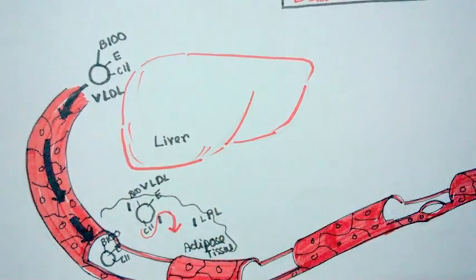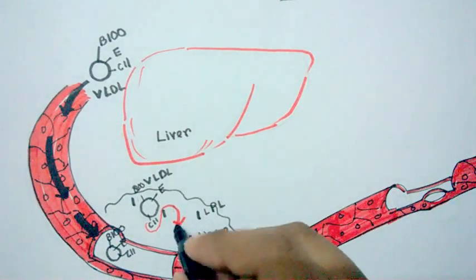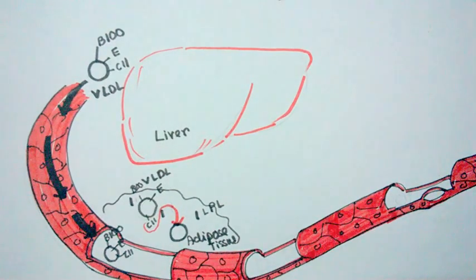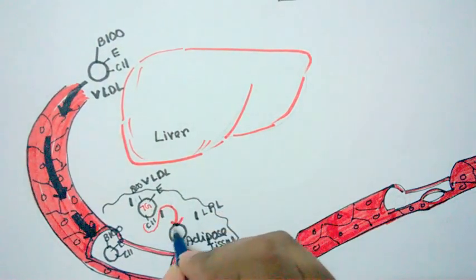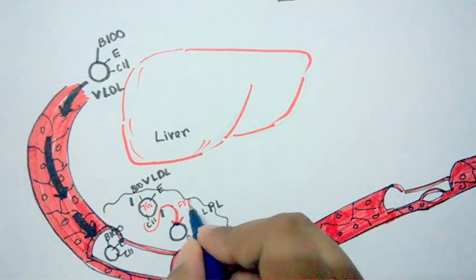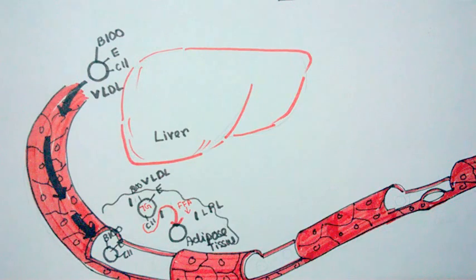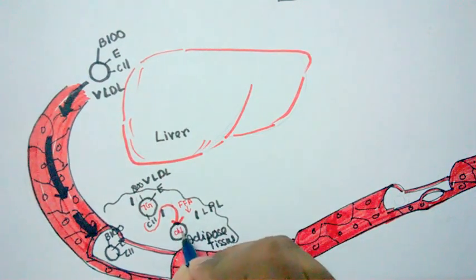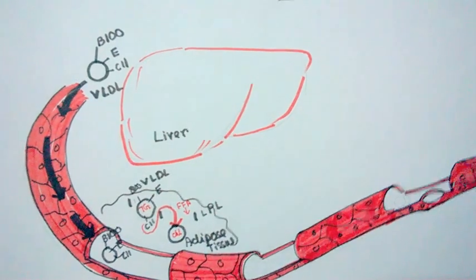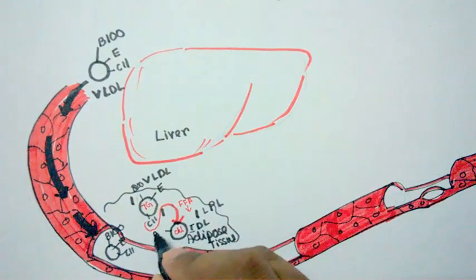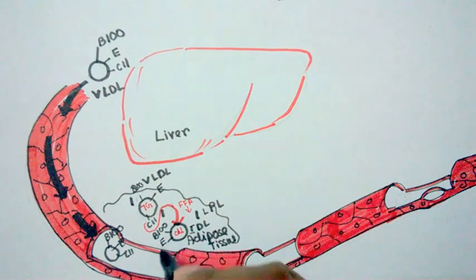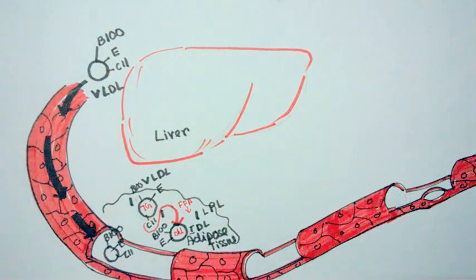Once docked to LPL, the triglycerides inside the VLDL are converted into free fatty acids, which are then stored in the adipose tissue. The resulting particle has a lot of cholesterol and is called intermediate density lipoprotein (IDL). It still has the ApoB100 tag and ApoE, but no longer has ApoC2, as that tag is lost during the process.